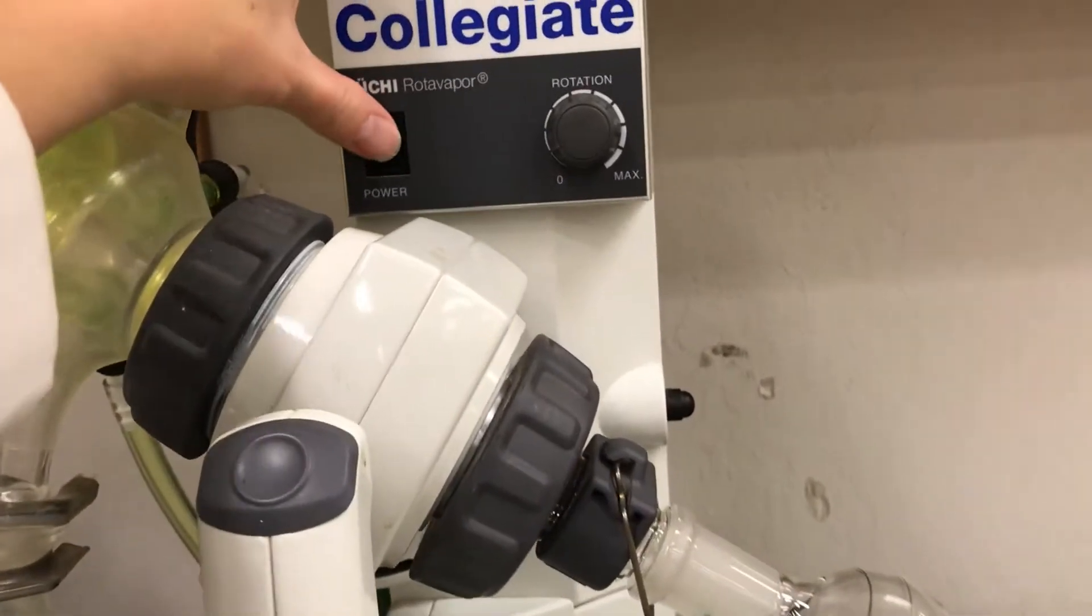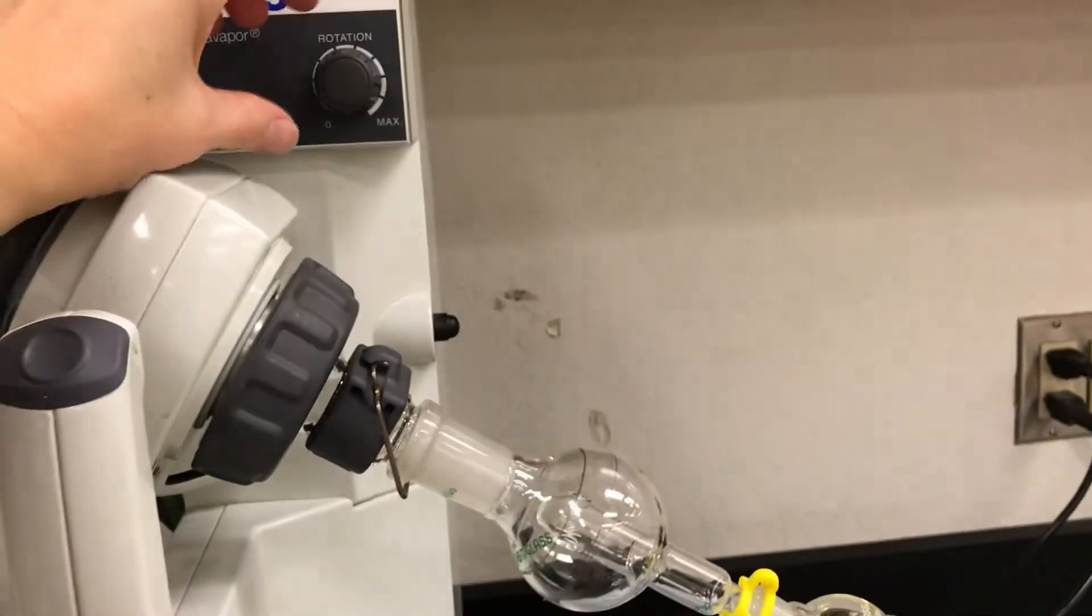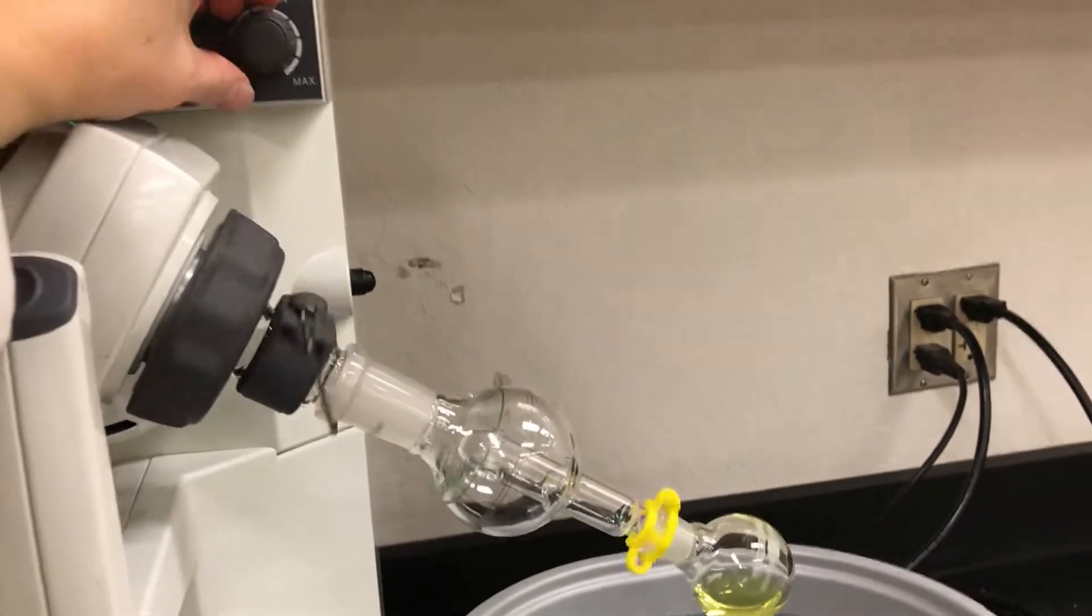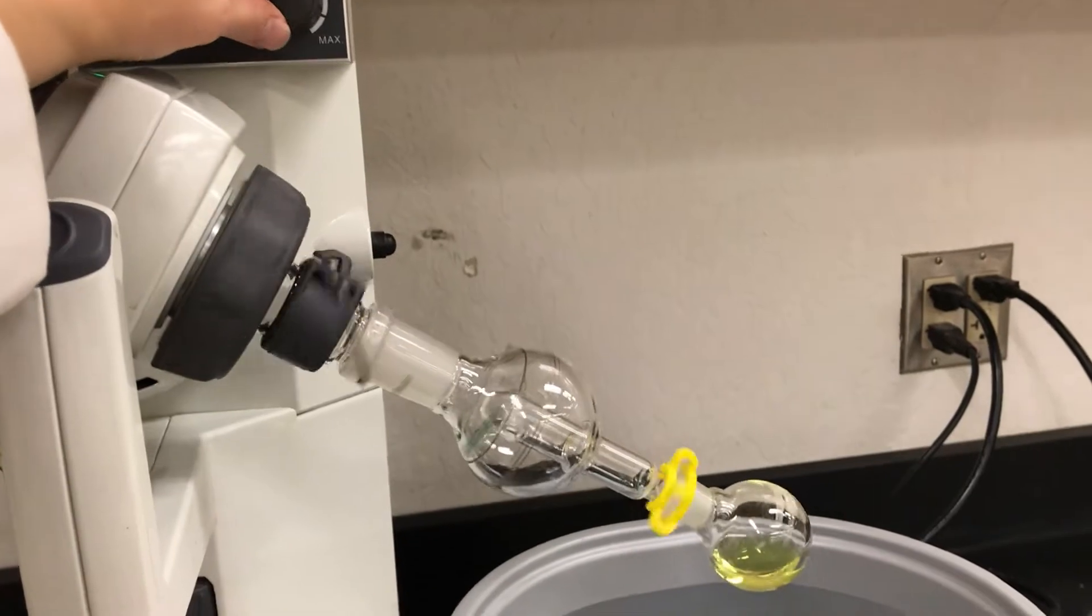Next I'll turn on the rotavap and then turn the rotation dial to start rotating the flask. Rotation makes evaporation faster and it also makes it less likely to bump.